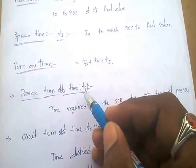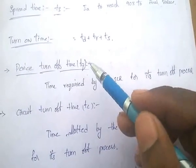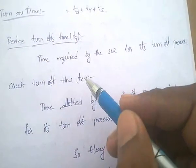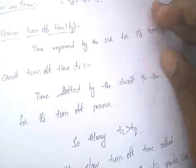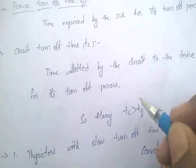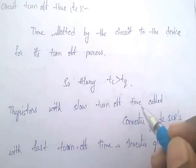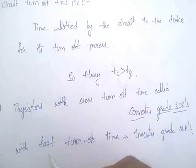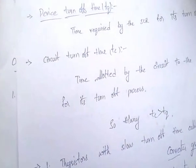Device turn-off time (TQ) is the time required by the SCR for its turn-off process. Circuit turn-off time (TC) is the time allotted by the total circuit to the device for its turn-off process. Always TC > TQ. Thyristors with slow turn-off times are called converter grade SCRs; thyristors with fast turn-off times are called inverter grade SCRs.